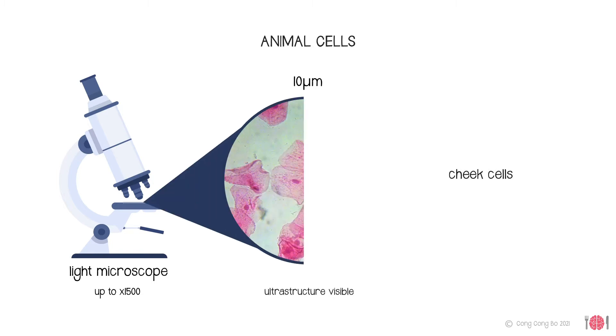The average animal cell is around 10 micrometres in diameter, much too small to see with the naked eye. Under a light microscope, however, which can magnify our cell samples up to 1,500 times, we can see the internal workings, known as the ultrastructure of cells.